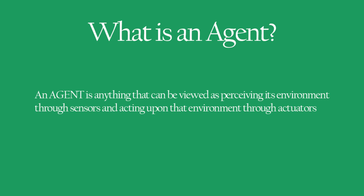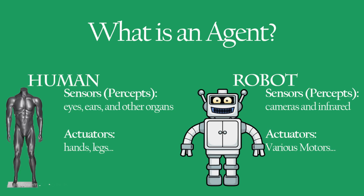Here come two examples of that. Humans are agents. A human agent has eyes, ears, and other organs for sensors, and hands and legs as actuators. A robotic agent may have cameras and infrareds for sensors and various motors for actuators. Software is also considered an agent. A software agent receives keystrokes, file contents, and network packets as sensory inputs and acts on that environment by displaying contents on the screen, writing files, and sending network packets.